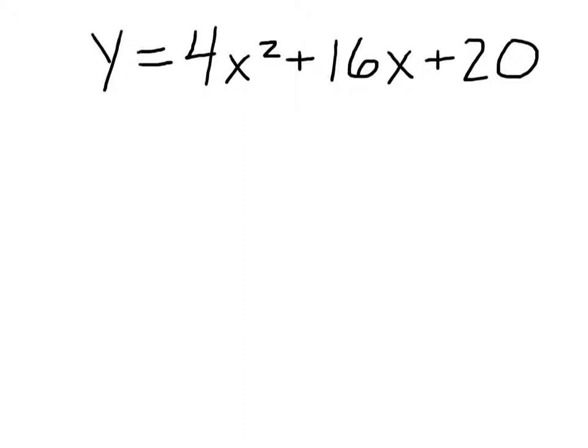But we can find the vertex. Once you know the vertex, you can find out all the other characteristics — the line of symmetry, the max and min, and all that stuff. The key to this is the minus B over 2A. Minus B over 2A — that gives us the X.